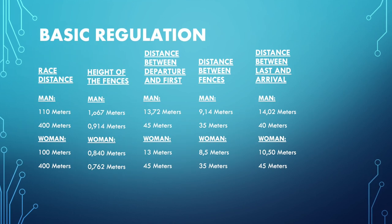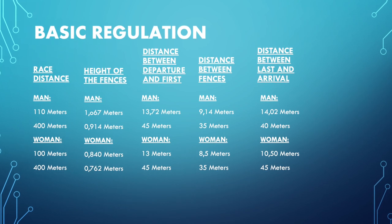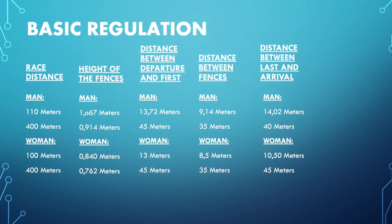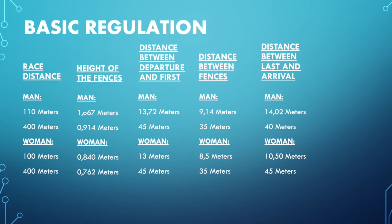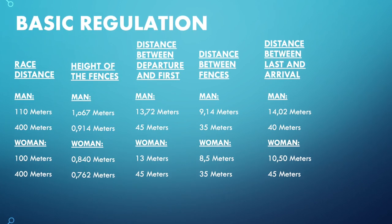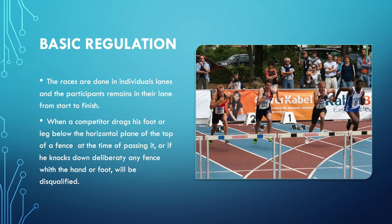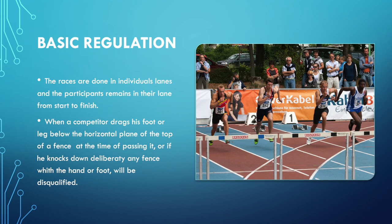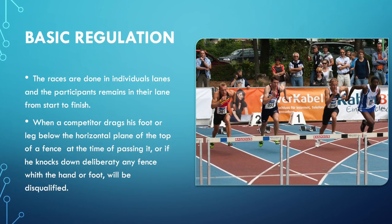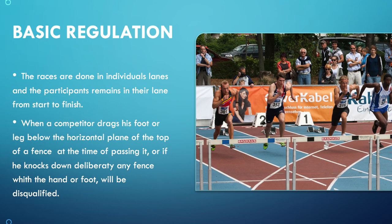Now I am going to talk about the basic regulation. If you can see, there is a small table that explains two different competitions for men and women. In men we have 110 meters and 400 meters, and in women we have 100 meters and 400 meters. You can see the difference between the height of the hurdle, the distance between the start and the first hurdle, the distance between hurdles, and the distance between the last hurdle and the finish. Also, the races are done in individual lanes and the participant remains in the lane from start to finish. When a competitor draws his foot or leg below the horizontal plane of the top of a hurdle while passing it, or if he knocks down any hurdle with the hand or foot, he will be disqualified.